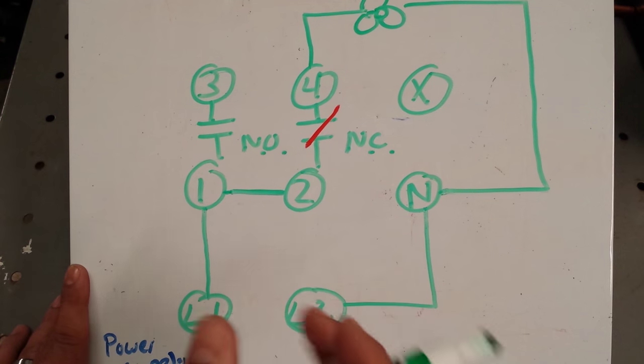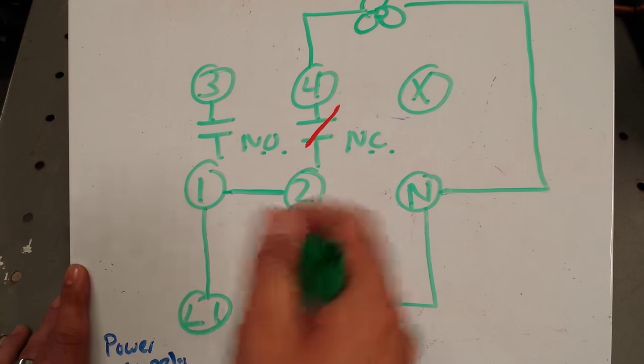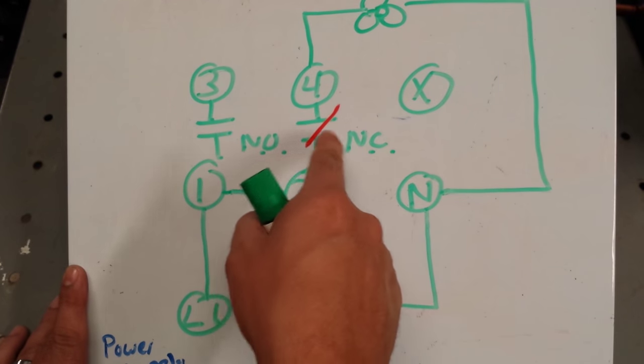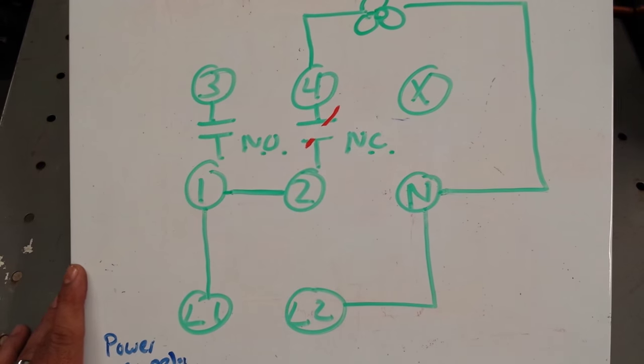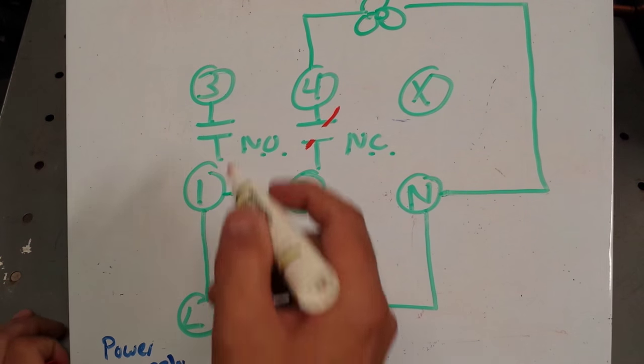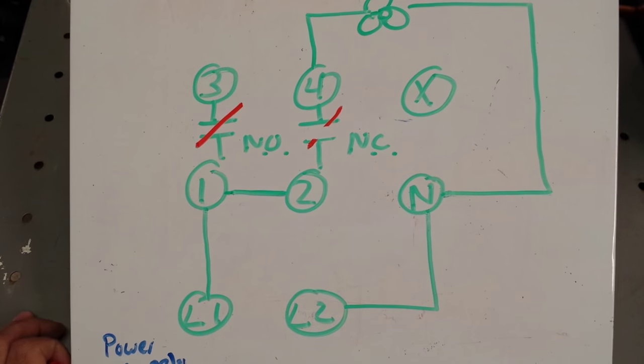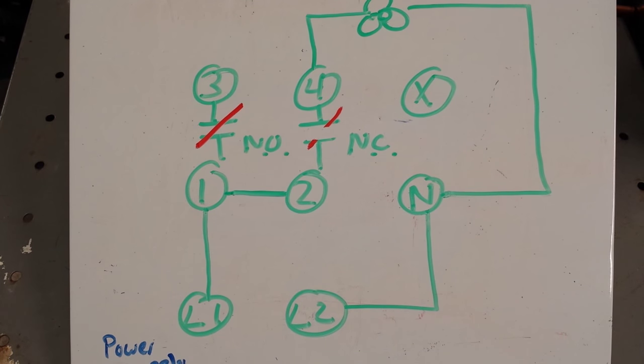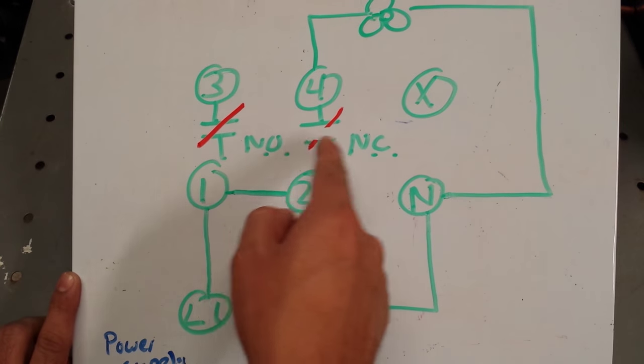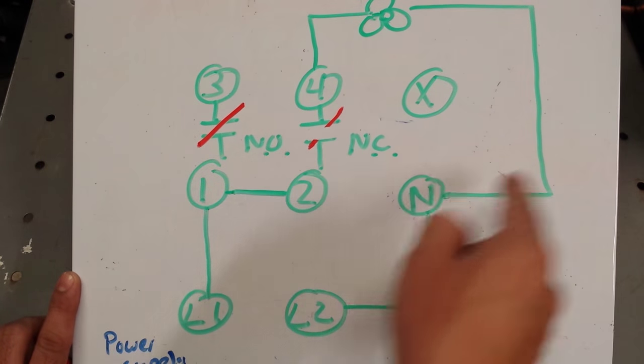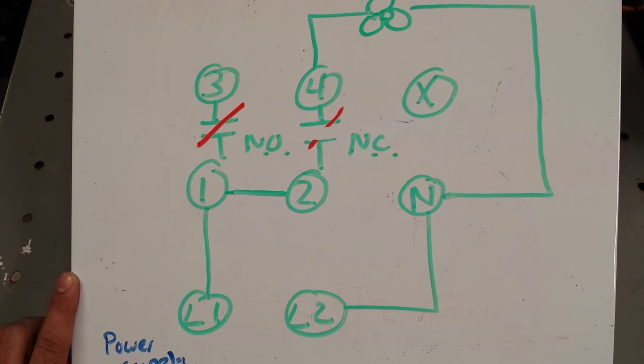The moment this defrost clock turns and gets energized by one of the pins, and defrost is initiated, our contact points between terminals 2 and 4 is going to open. And then 1 and 3 contacts will close. When that happens, our evaporator fan is no longer running because our circuit is open. We don't have a complete path anymore. The fan motor is non-operational.